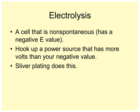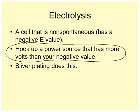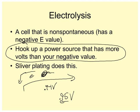Electrolysis: a cell that is non-spontaneous has a negative E value. You can hook up a power source that has more volts than your negative value, and silver plating does this. So all you do is you just out-muscle it. If you've got something that will push electrons at 0.94 volts, it'll push your electron this way. Well, if you've got something that'll push electrons at 0.95 volts going the other way, you're losing. Electrons are going this way.